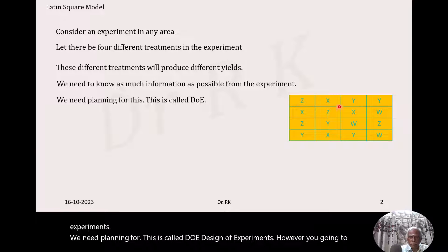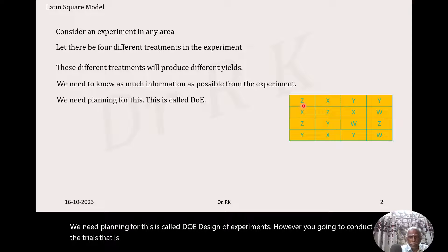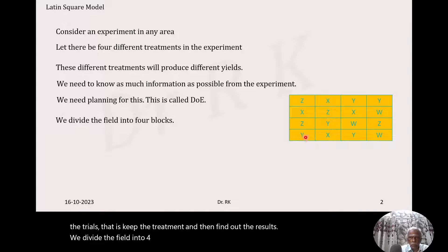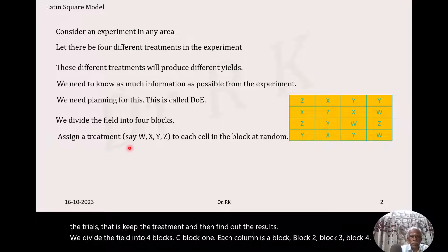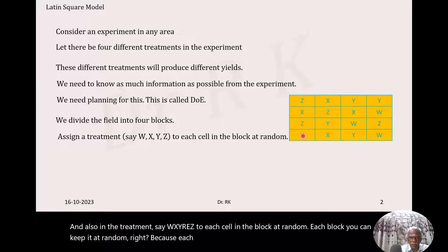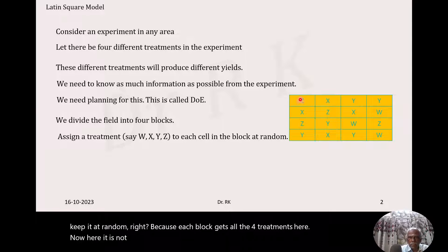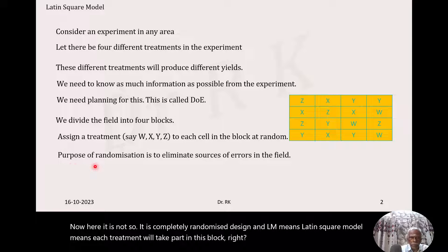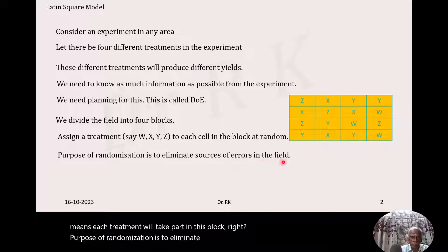How are you going to conduct the trials? Keep the treatment and then find out the results. We divide the field into four blocks — block one, block two, block three, block four, where each column is a block. Assign a treatment, say W, X, Y, Z, to each cell in the block at random. Each block gets all four treatments. This is completely randomized design. In the Latin square model, each treatment will take part in each block. The purpose of randomization is to eliminate the sources of error in the field.